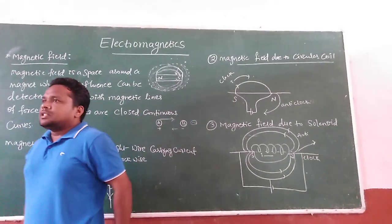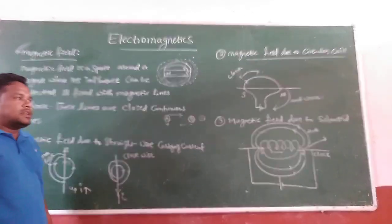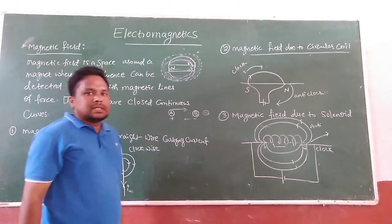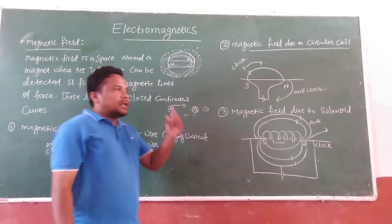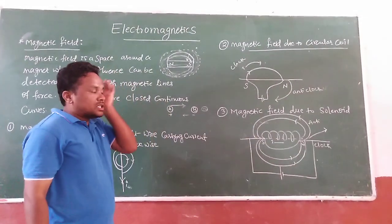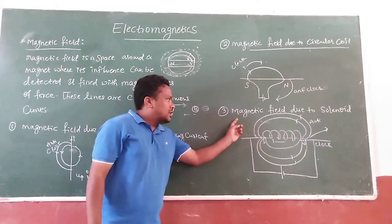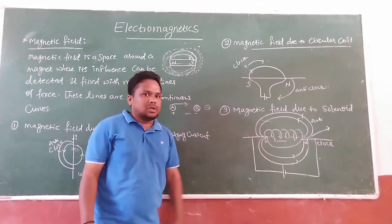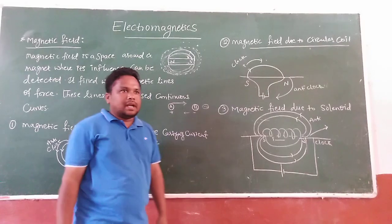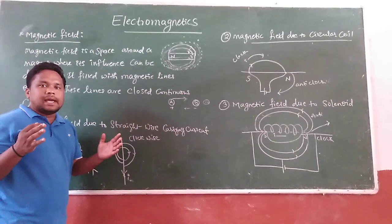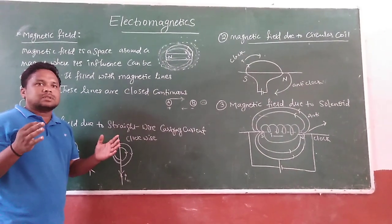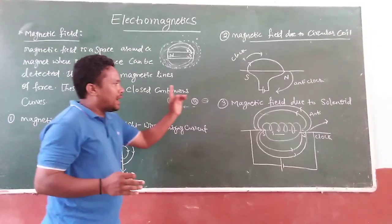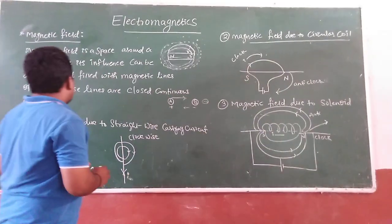In your 10th class examination they will ask questions like: justify your answer — how are the magnetic field lines closed and continuous curves? For that type of question, you need to write the solenoid answer. We are going to discuss about the solenoid and how the magnetic field lines are closed and continuous curves.